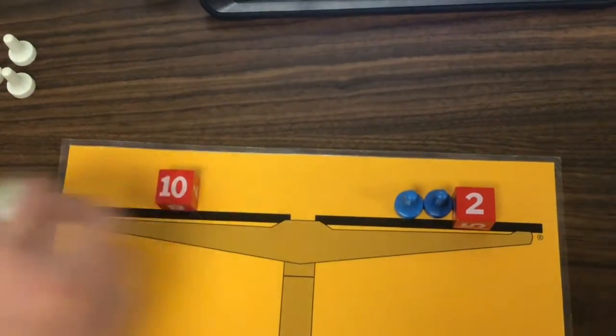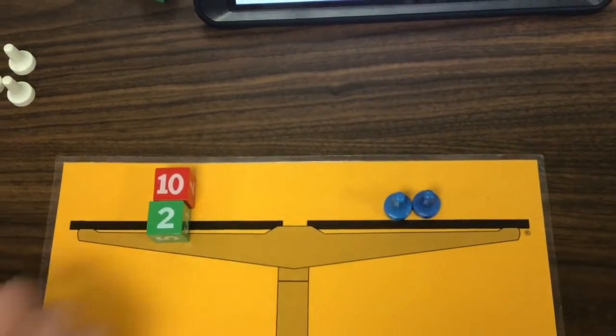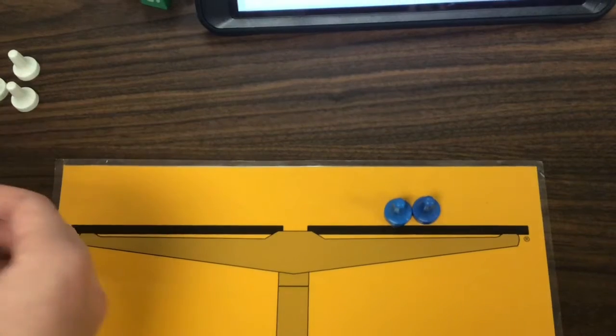So then you'd have to add a negative 2 to both sides. So this would equal 0, and this would equal 8. So x equals 4.